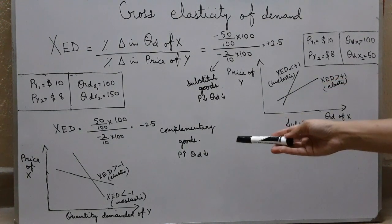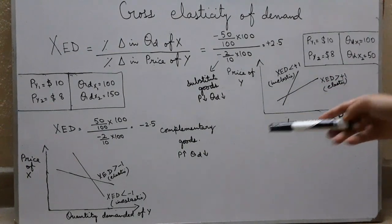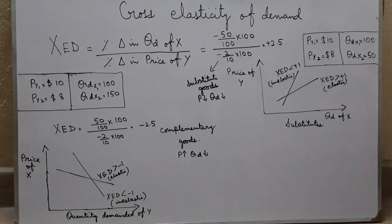And what's the relationship between complementary goods? That is an inverse relationship. If the price of a car goes up, then there would be less demand for petrol.